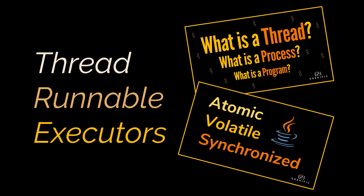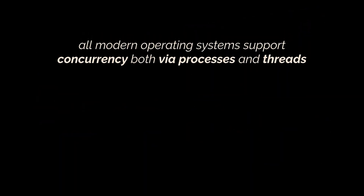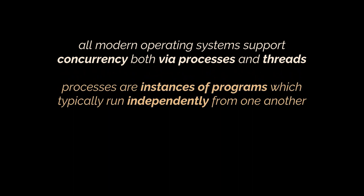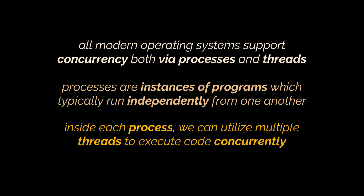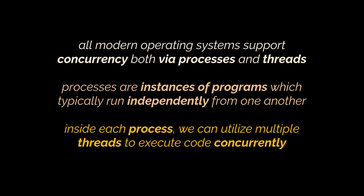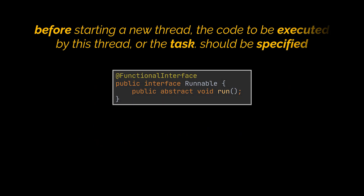All modern operating systems support concurrency both via processes and threads. A small reminder from our previous video: processes are instances of programs which typically run independently from one another, and inside each process we can utilize multiple threads to execute code concurrently. Java supports threads since JDK 1.